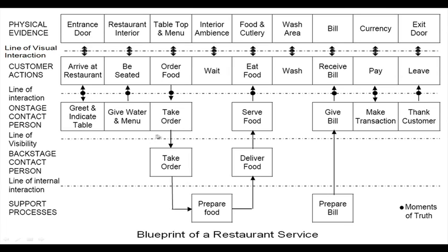Here we have talked about three lines: the line of interaction between the customer and the on-stage contact person; then the line of visibility, beyond which nothing is visible to the customer; and then the line of internal interaction between the backstage contact person and the cook who prepares the food. After eating, there is again contact between the on-stage contact person and the customer. The customer washes, receives the bill from the contact person, and the contact person in turn receives the bill from the prepare-bill support process. The customer then pays with the help of the on-stage contact person.